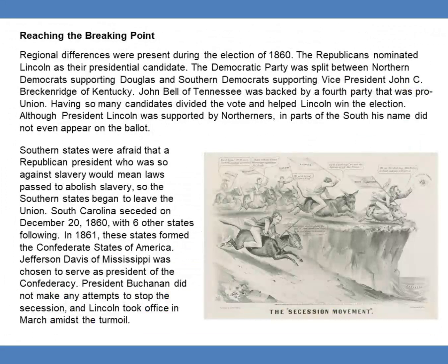Reaching the Breaking Point. Regional differences were present during the election of 1860. The Republicans nominated Lincoln as their presidential candidate. The Democratic Party was split between Northern Democrats supporting Douglas and Southern Democrats supporting Vice President John C. Breckinridge of Kentucky. John Bell of Tennessee was backed by a fourth party that was pro-union. Having so many candidates divided the vote and helped Lincoln win the election.